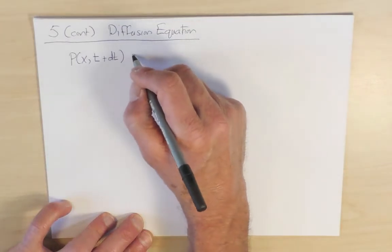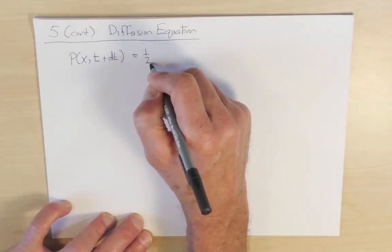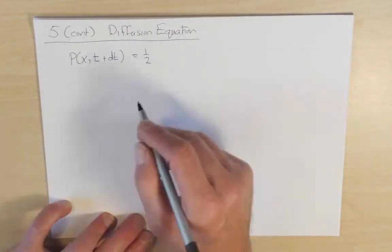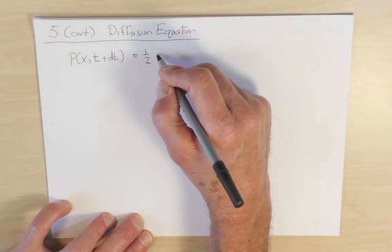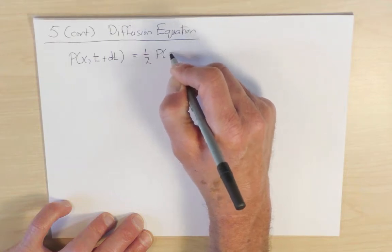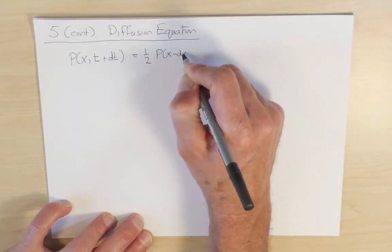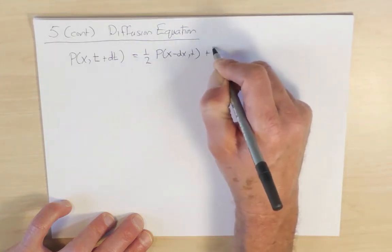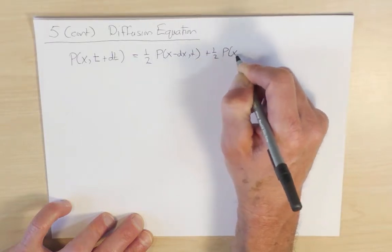So the master equation from the previous slide will be p(x,t+dt) is one-half for probability of hopping from x minus one to x. But instead of writing x minus one, we'll write x minus dx comma t, and then I have plus one-half p(x+dx,t).